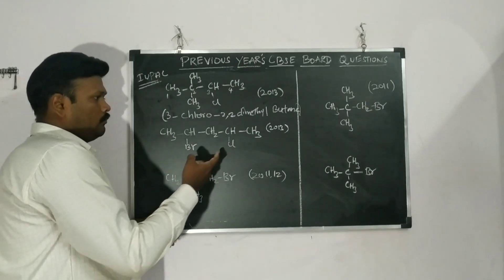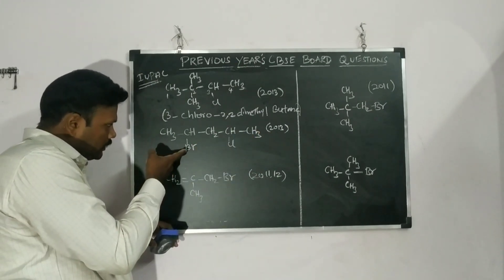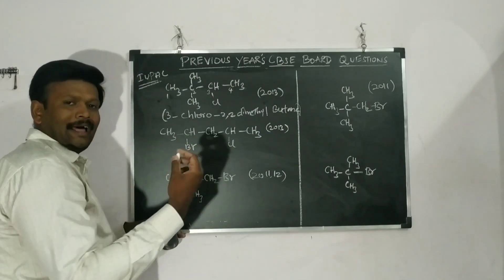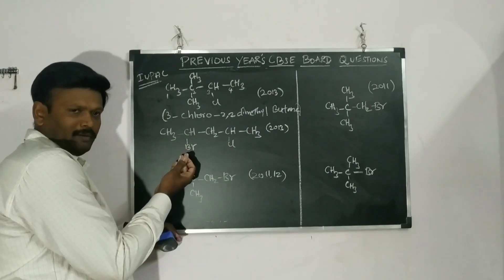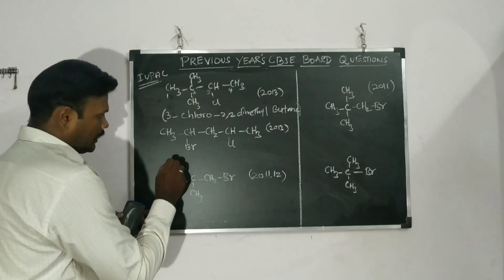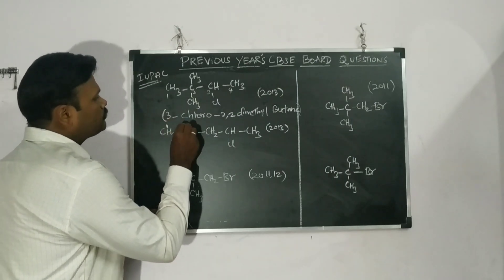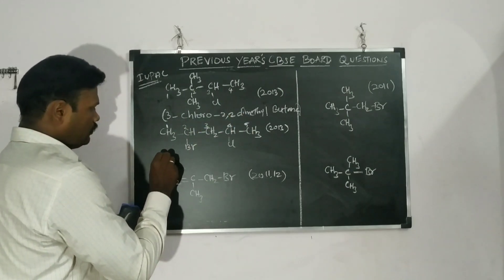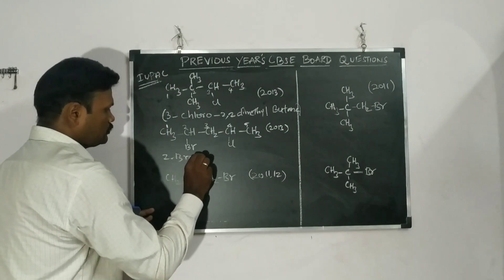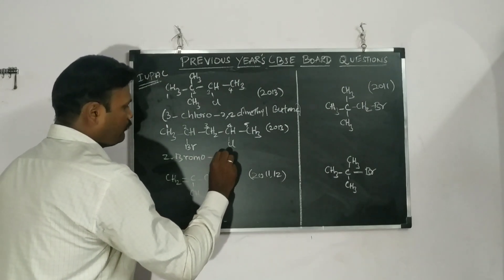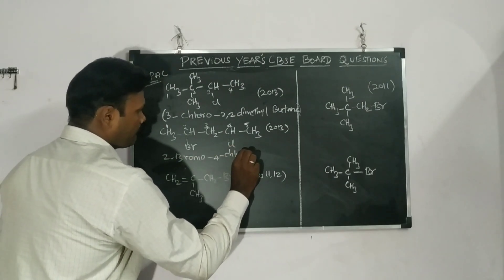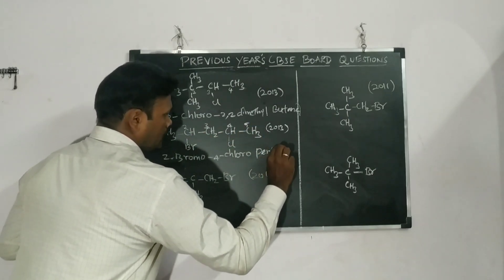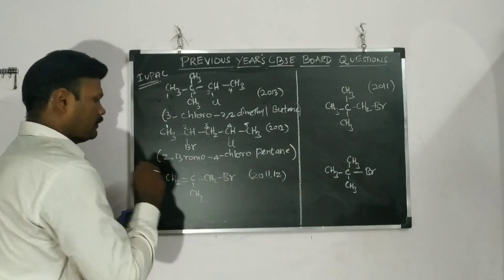The second compound — also asked in 2013 — has both bromine and chlorine. We have to follow alphabetical order, so bromine comes first. Numbering from this end: one, two, three, four, five. The name is 2-bromo-4-chloropentane. Five carbon atoms, so pentane.